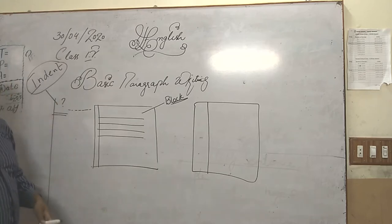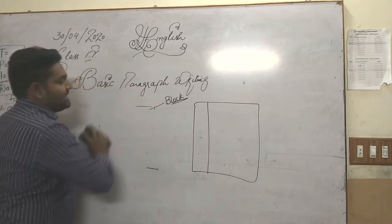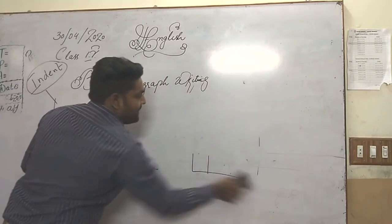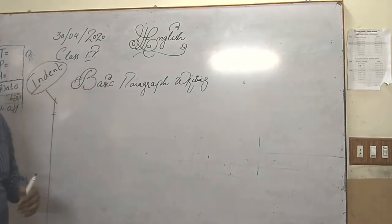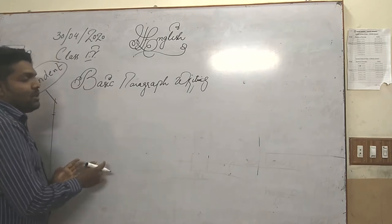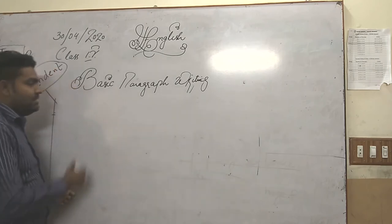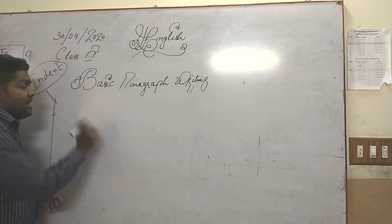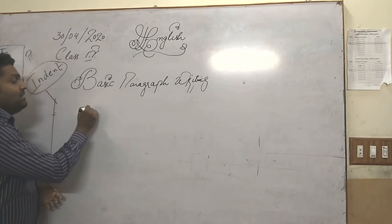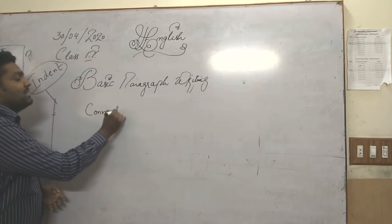Now let's start — how to write the basic paragraph. I am giving you a technique to write the basic paragraph, and this way you will be able to write at least 4 to 5 lines. Whether you are going towards the block side or the indent side, it's up to you. But the first thing you have to follow is connectivity.